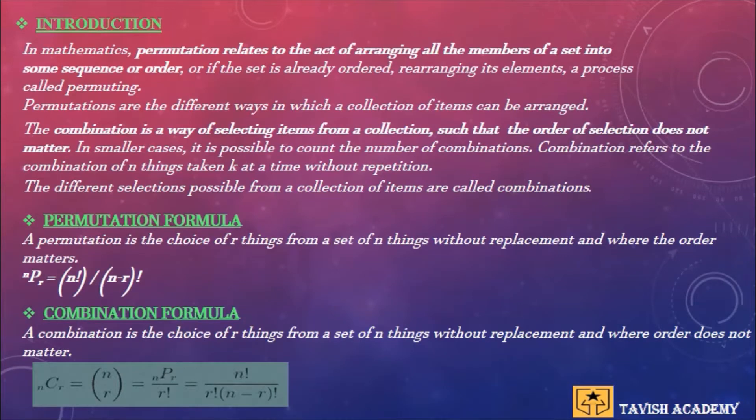In mathematics, permutation relates to the act of arranging all the members of a set into some sequence or order, or if the set is already ordered, rearranging its elements, a process called permuting.